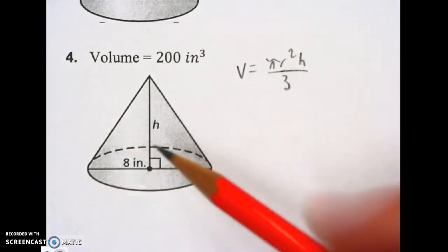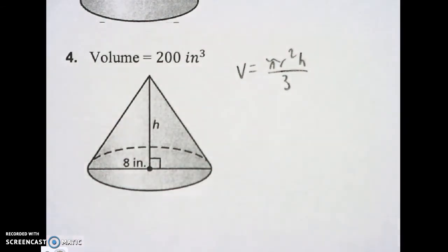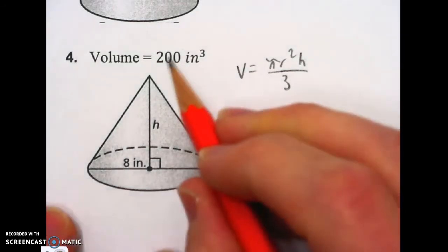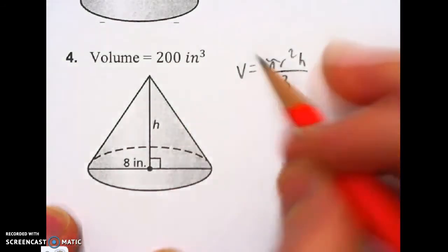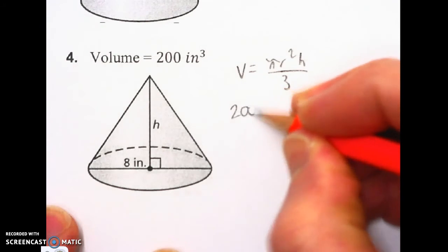Now I'm going to plug in the pieces that I have. I have a volume, so I'm going to put the volume in right here where V is. So 200 goes in for V.